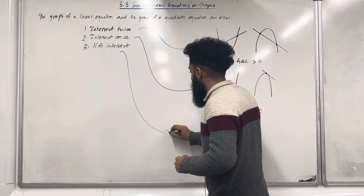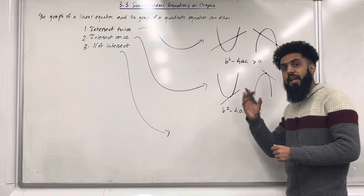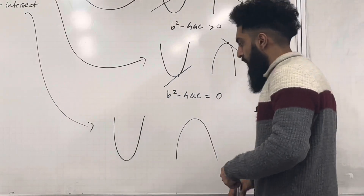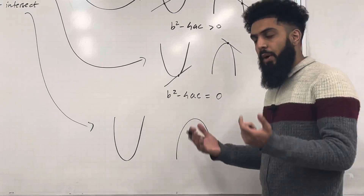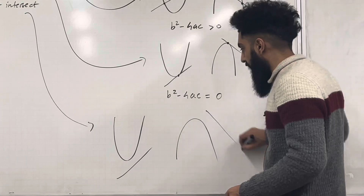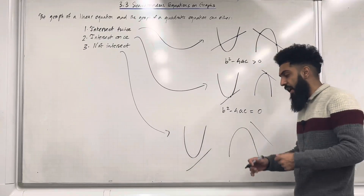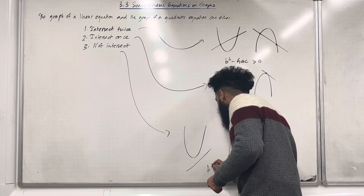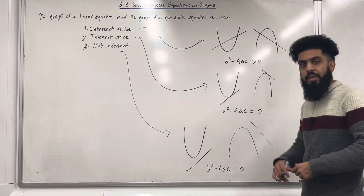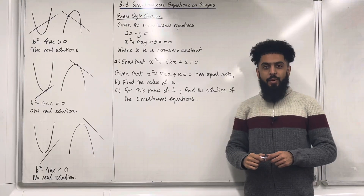Not intersect: again, you could have a positive quadratic or a negative quadratic, and the line will not intersect the quadratic. If we calculate the discriminant, b squared minus 4ac, in this instance it will be less than 0. There are no real roots — no intersection, as you can see from the graph.